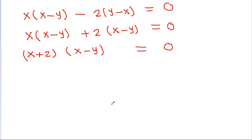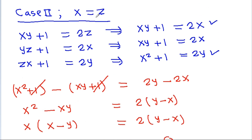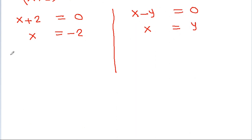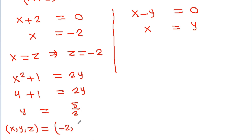So either x minus 2 equals 0, giving x equals 2... actually, x equals minus 2, or y equals x. Taking x equals minus 2: x squared plus 1 equals 2y gives 4 plus 1 equals 2y, so y equals 5/2. Hence the third solution is (x, y, z) equals (minus 2, 5/2, minus 2).